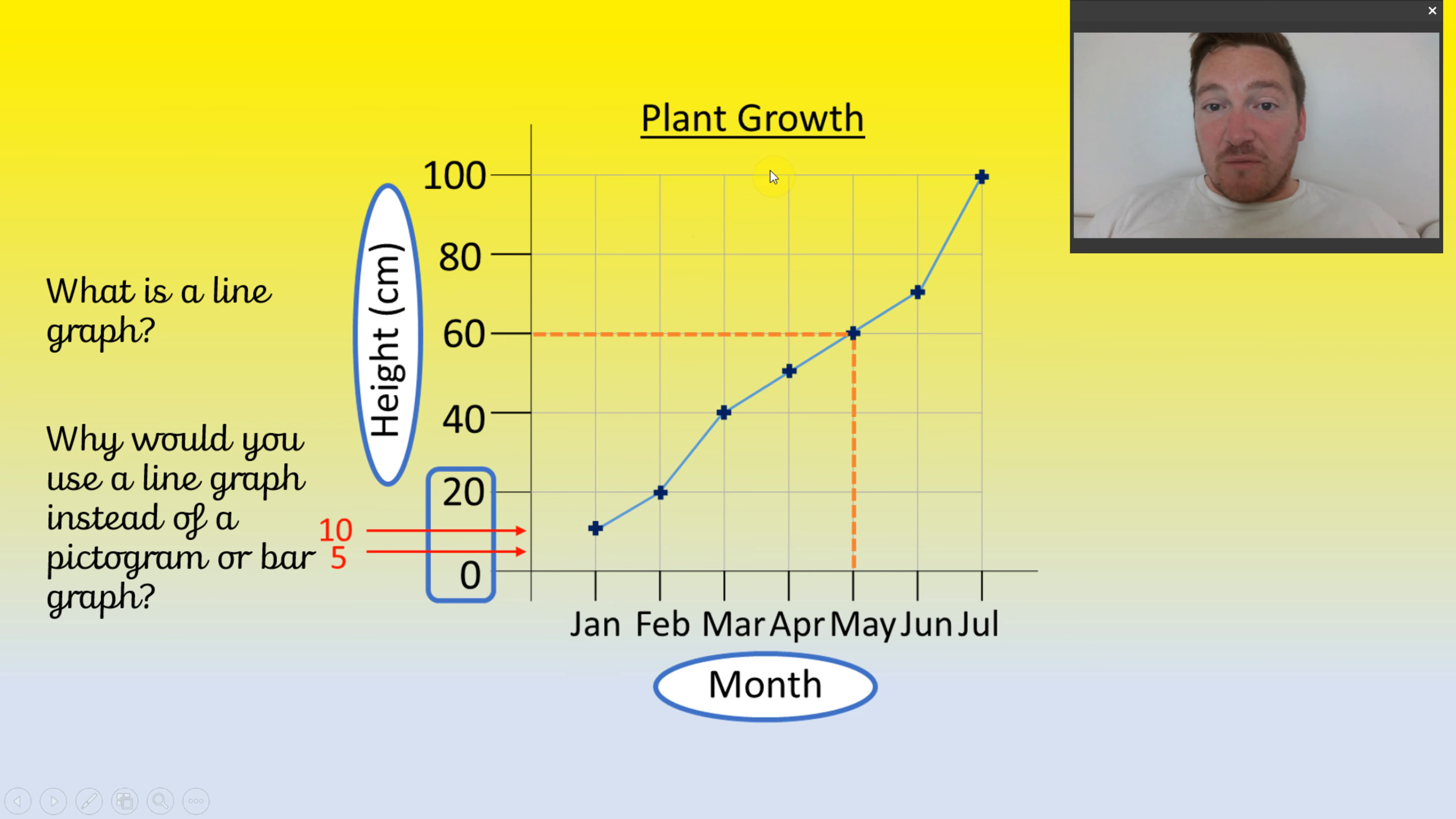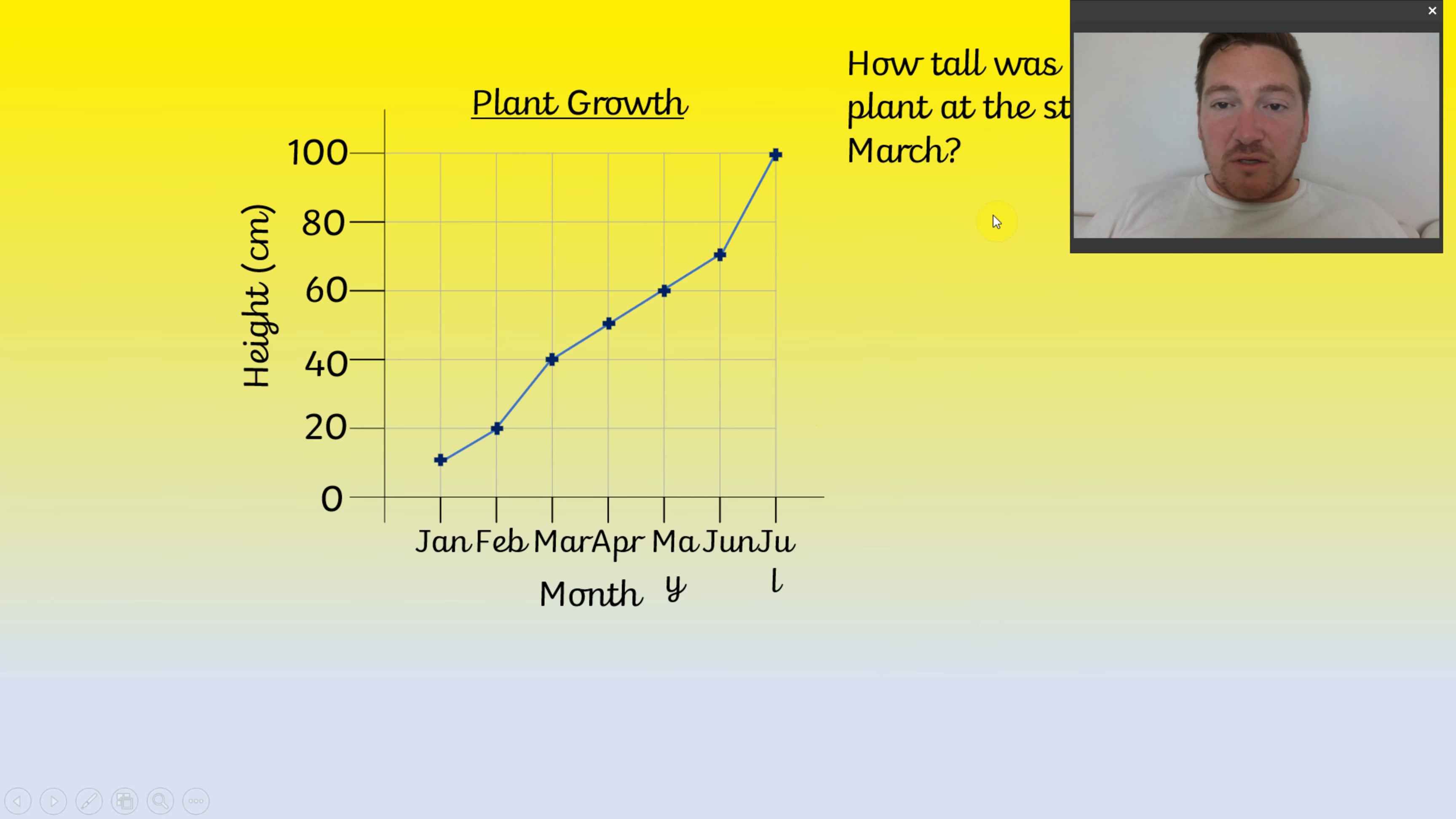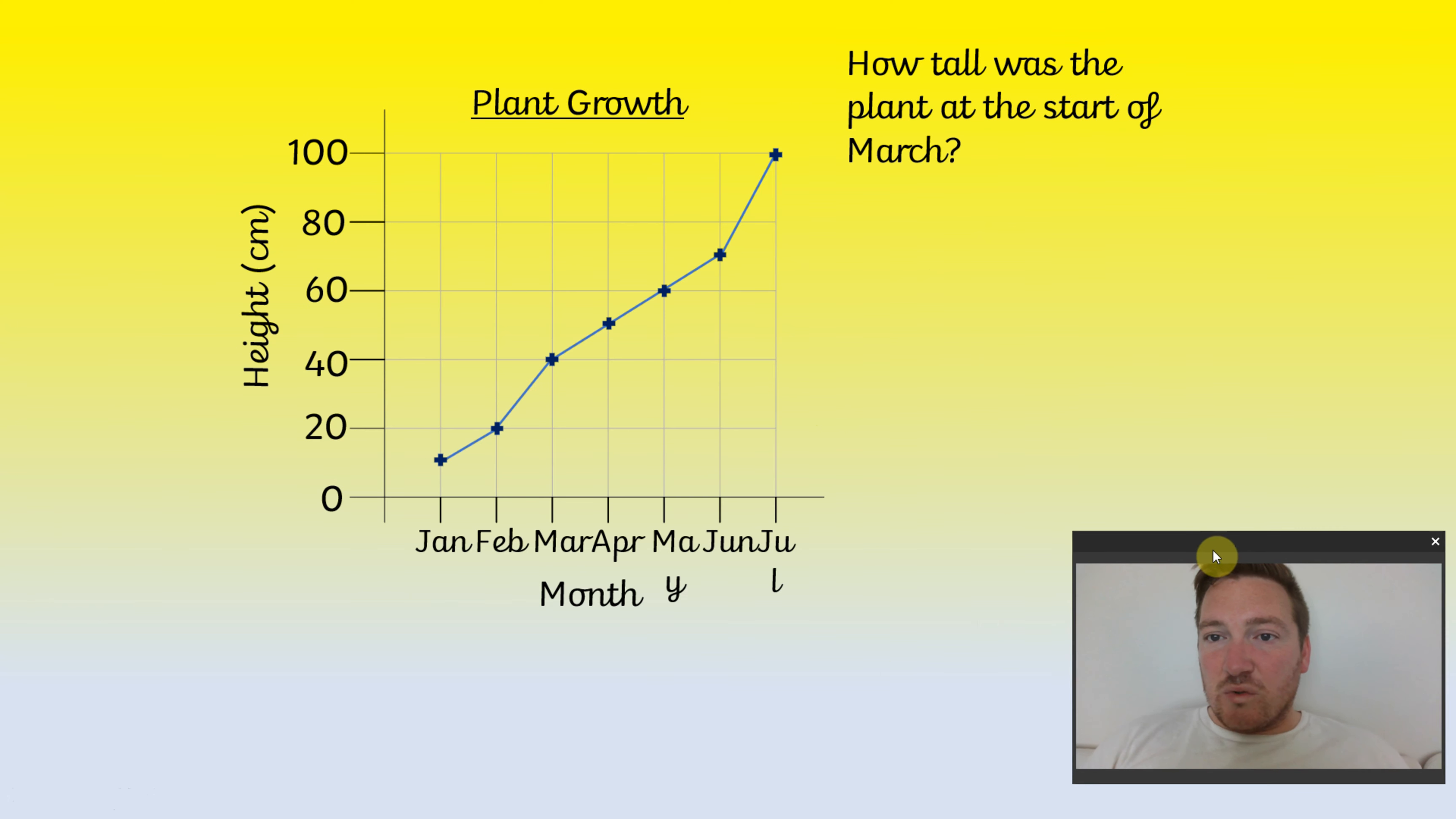So we can see here for plant growth we've got January to July and you can see how the plant has increased in height after each one of those months. So how tall was the plant at the start of March? Find March on the chart, track it up and look at the height. If you said 40 centimeters you'd be correct.